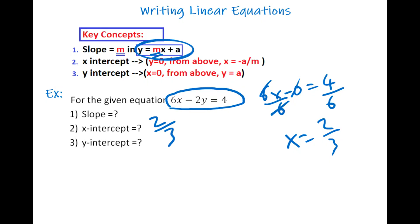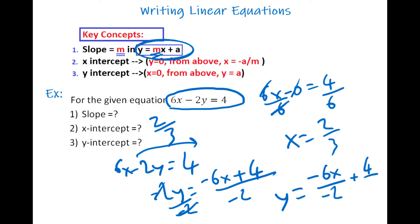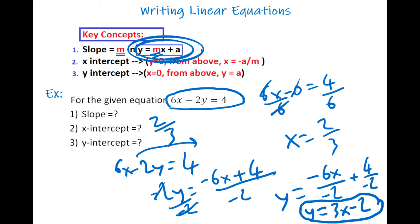In this case, to find the slope, we need to leave y alone. So let me write the equation: 6x minus 2y is 4. Send the 6x to the right, so negative 2y is going to be negative 6x plus 4. Divide both sides by the coefficient of y, which is negative 2. So y equals negative 6x divided by negative 2 plus 4 divided by negative 2, which gives y equals 3x minus 2. Once you write the equation in the form y equals mx plus a, the coefficient of x is the slope. So the slope is 3.